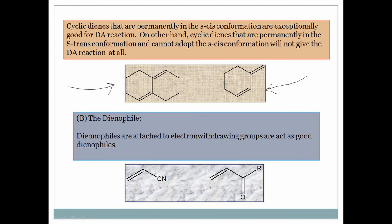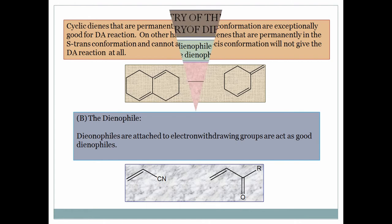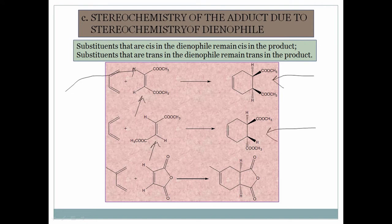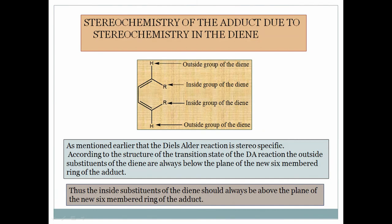For the dienophile, electron-withdrawing groups such as cyano groups and carbonyl groups increase the reactivity. Regarding the stereochemistry of the dienophile: if you subject a cis dienophile to the Diels-Alder reaction, the cis stereochemistry is retained in the product. If you take a trans compound, the trans stereochemistry is retained in the adduct. This is the thumb rule for the Diels-Alder reaction.